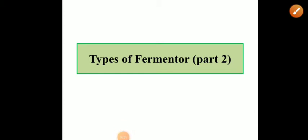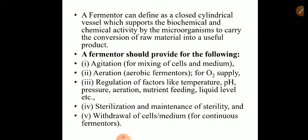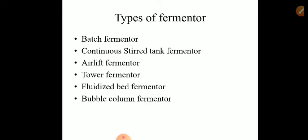Good afternoon dear students. Last time we discussed types of fermenters — batch fermenter, continuous fermenter, and airlift fermenter. A fermenter is a vessel which supports the production of a commercially valuable product by using microorganisms. Various types of fermenters include batch fermenter, continuous stirred tank fermenter, airlift fermenter, tower fermenter, fluidized bed fermenter, packed bed fermenter, and so on. Today we are going to discuss the remaining three types.